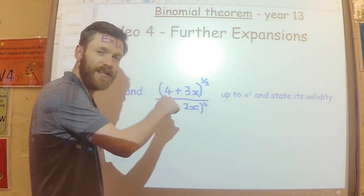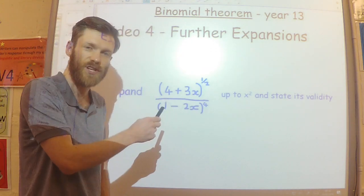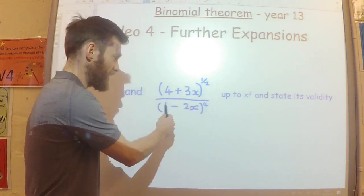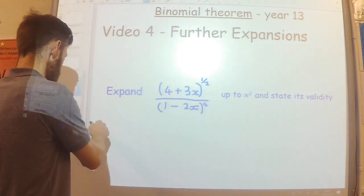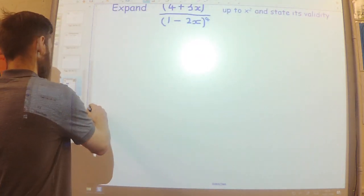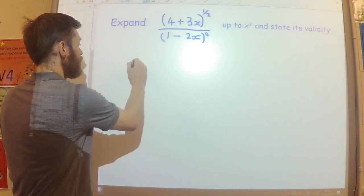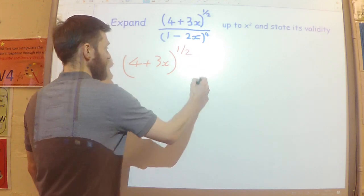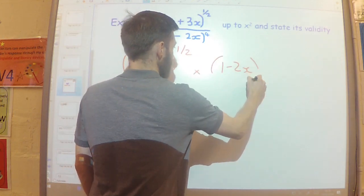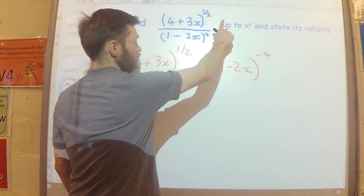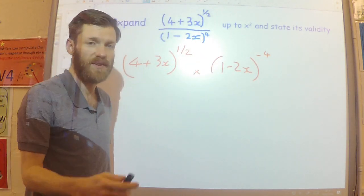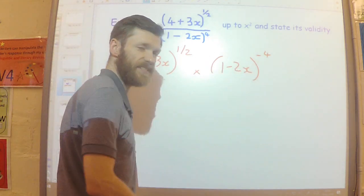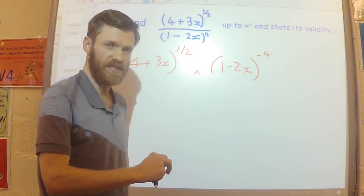So the first job is we need to rewrite this as a product of two binomials with them both being on the numerator. So basically I need to take this and put it to the top. So I'm going to rewrite this as 4 plus 3x to the power of 1/2, multiplied by 1 minus 2x to the power of minus 4. So I've just taken this, moved it up to the top, with a minus 4 power. We are now going to expand both of these separately, and then put the results together afterwards.